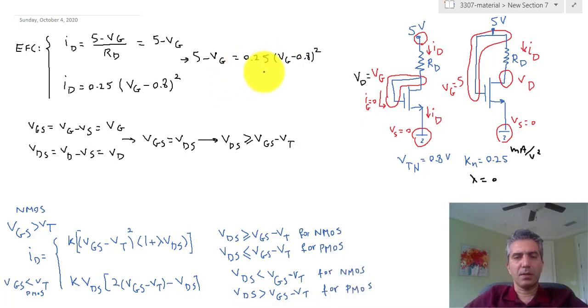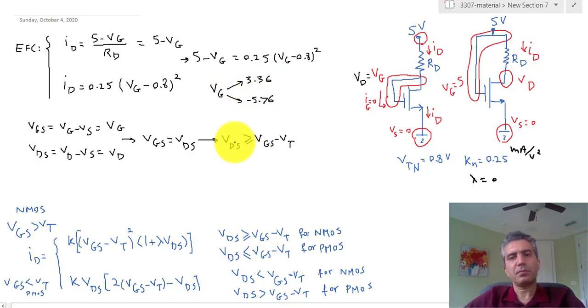Minus 0.8 to the power of 2. Now if you solve this equation, you're going to get actually two values for VG. It could be either 3.36 or it could be minus 5.76. Now from these two, obviously you can tell which one is the correct answer. This would be the correct answer, as you can't really turn on an NMOS with a VGS that is negative.